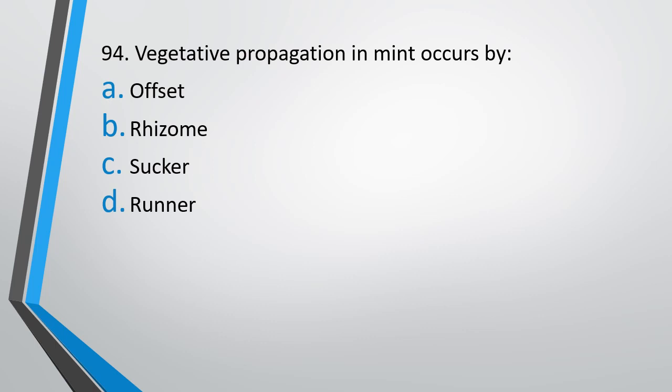Question number 94. Vegetative propagation in mint occurs by? Offset, Rhizome, Sucker or Runner. Correct answer is option C — Sucker.